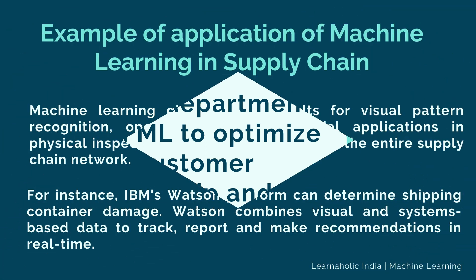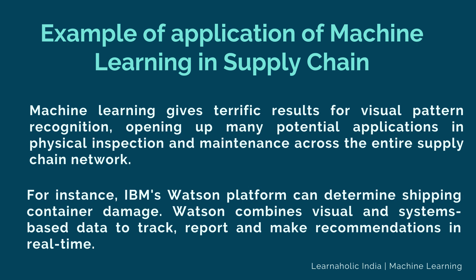Now let's see an example of applications of machine learning in supply chain. Machine learning gives terrific results for visual pattern recognition, opening up many potential applications in physical inspection and maintenance across the entire supply chain network. Unsupervised learning can quickly search for compatible patterns in diverse datasets. In turn, the machine can perform quality inspection throughout logistic hubs for shipment damage and wear.